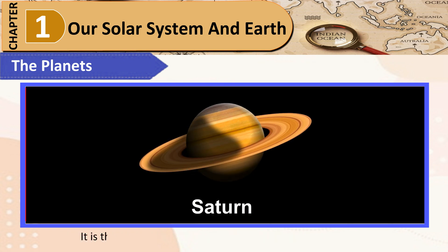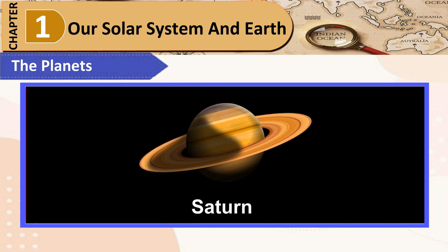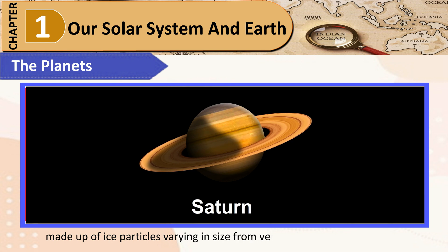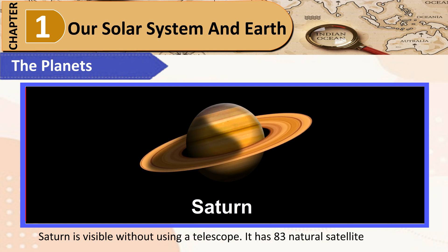Saturn: It is the second-largest planet in our solar system after Jupiter and is known for its rings. Space studies show that this planet has 12 major rings, made up of ice particles varying in size from very small to as big as an iceberg. Saturn is visible without using a telescope. It has 83 natural satellites at present.